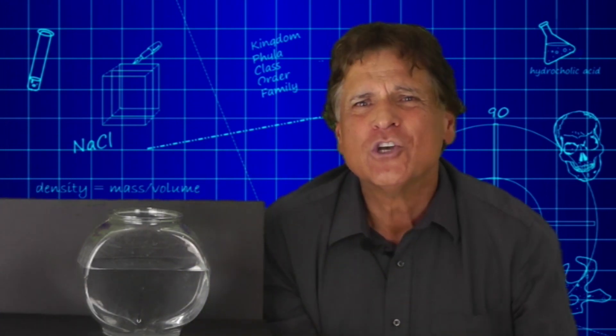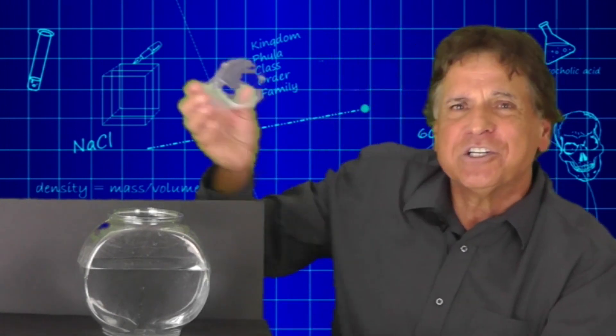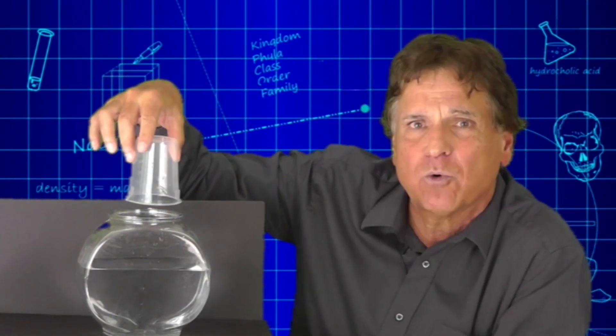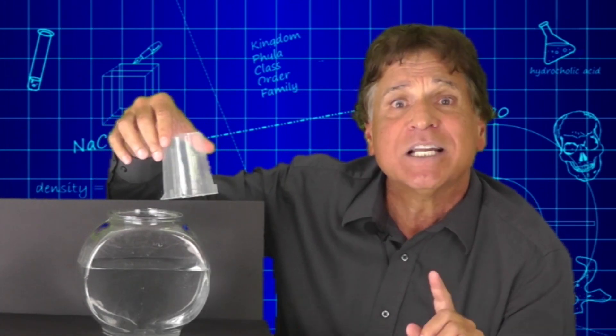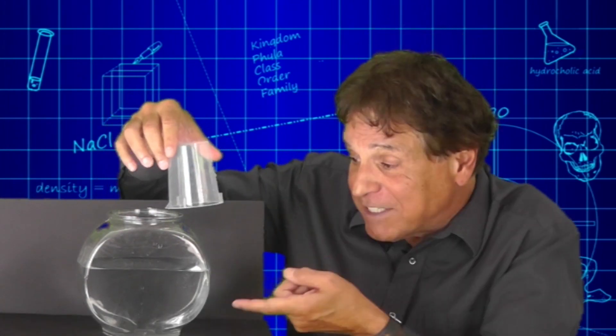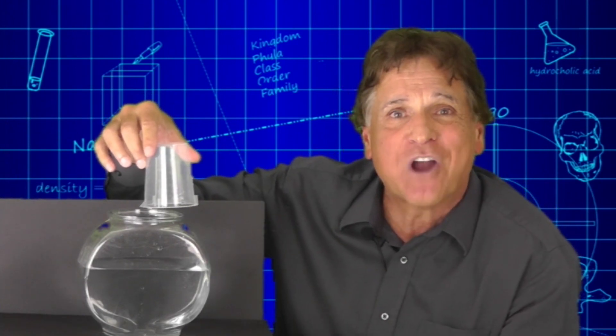Why didn't it get wet? Well, something was in the way. This cup, when I turned it upside down and placed it into the water, was filled with gas from the atmosphere. And as we know, gas takes up space, which prevented the water from entering the cup. Therefore, the paper stayed dry.